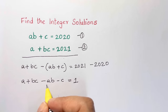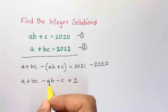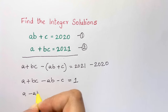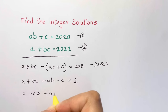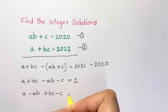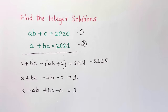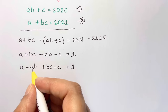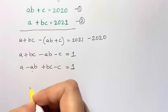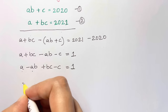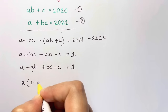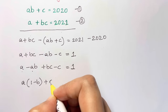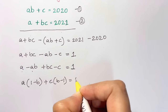Now let's combine the terms. I can see a and a, so: a minus a·b, then plus b·c minus c, is equal to 1. I have a common term 'a' here, so let me take it out: a times (1 minus b), and here I can take out c common, giving c times (b minus 1), equals 1.